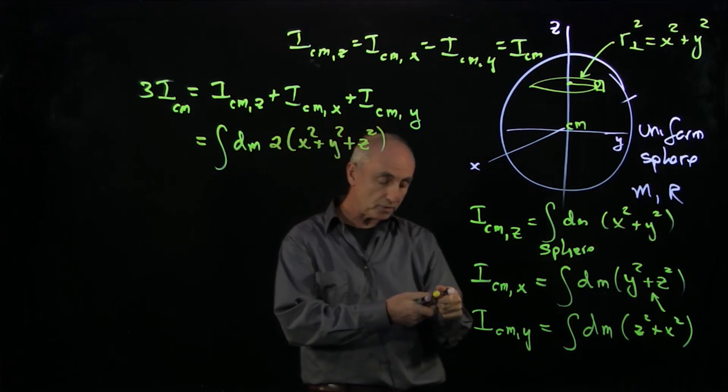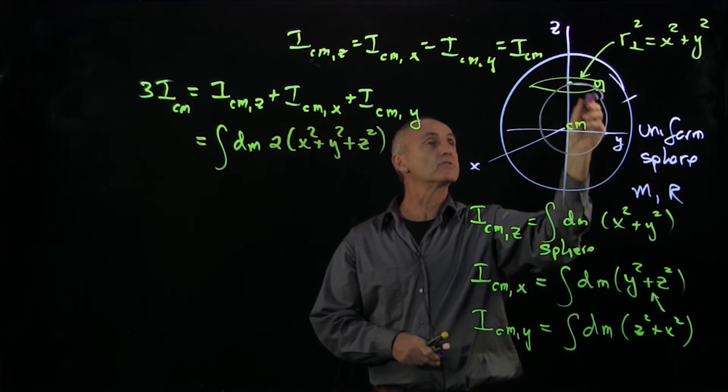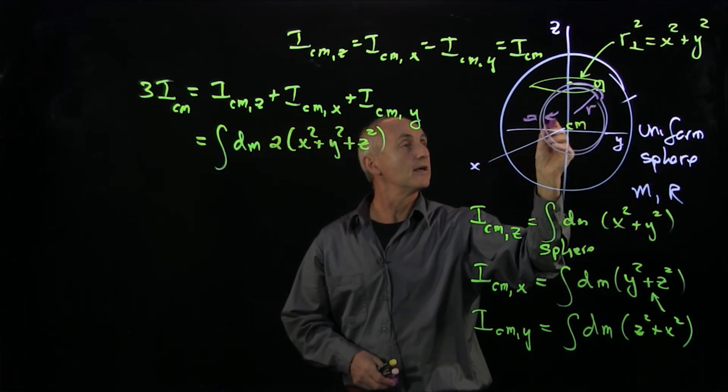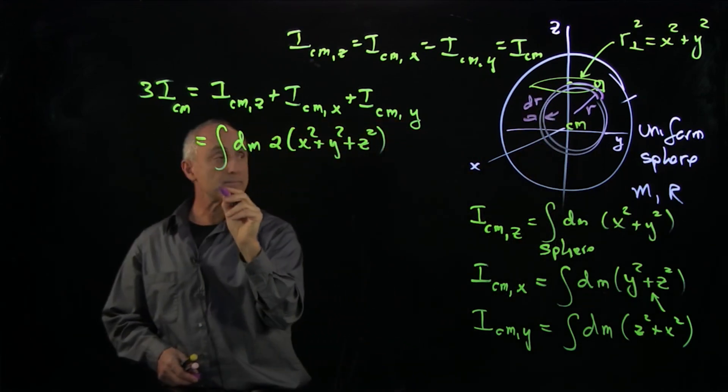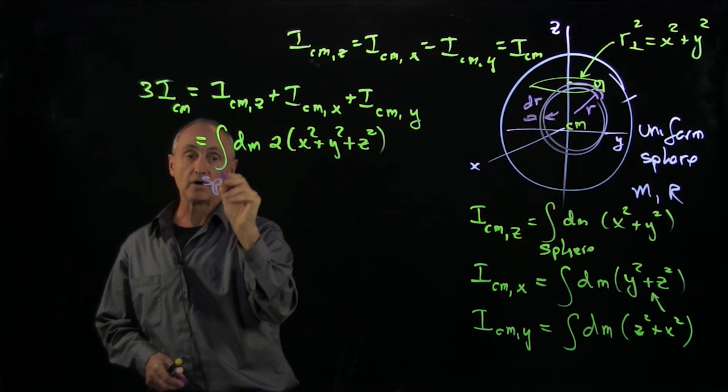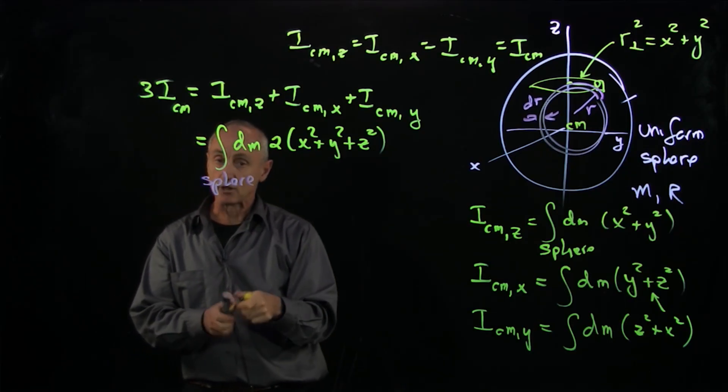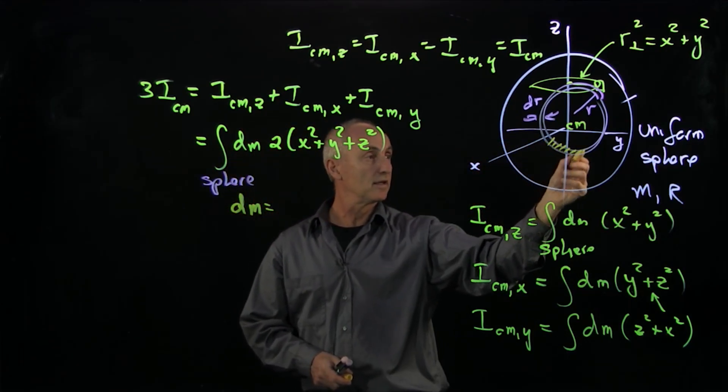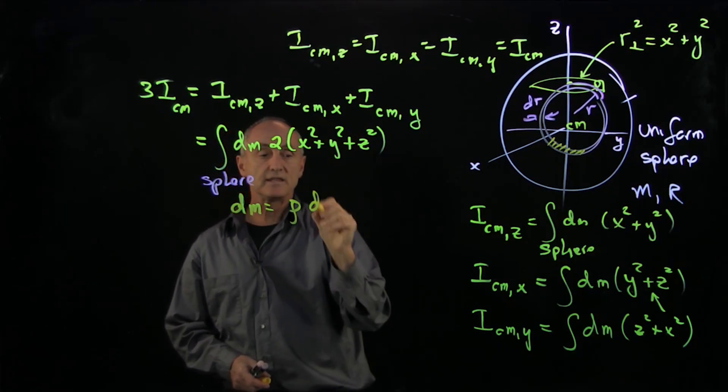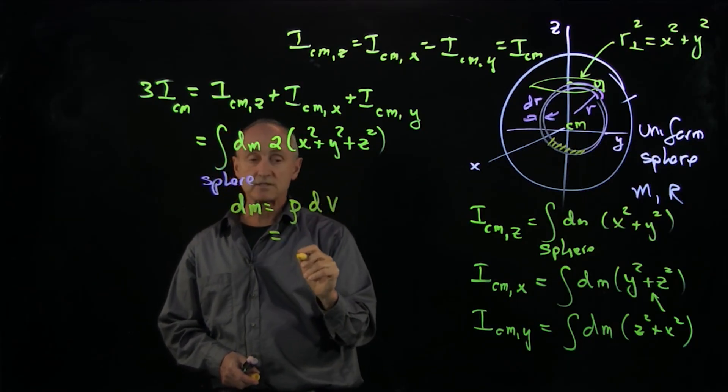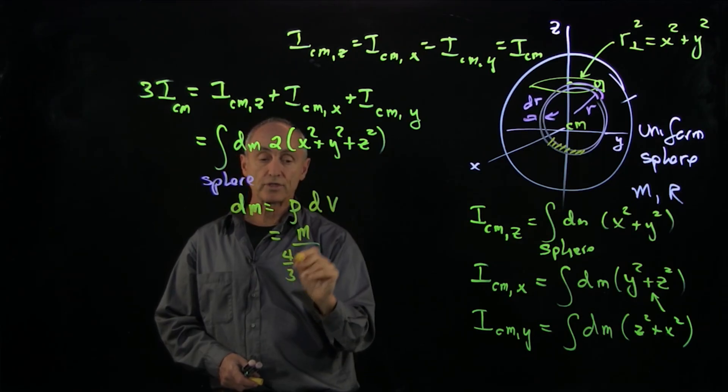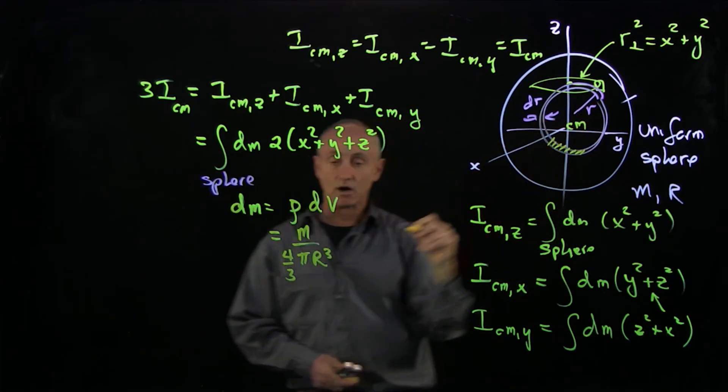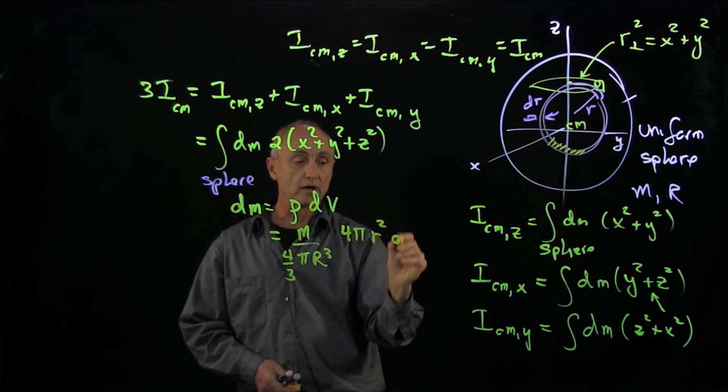But x squared plus y squared plus z squared is the radius of a small sphere of thickness dr. And my mass element, now I have to integrate over the sphere. And so now our mass element, dm, is the volume density times the volume. Now, what is the volume density? Well, that's the total mass over 4 thirds pi r cubed. And what is the volume of a sphere of radius r and thickness dr? That's 4 pi r squared dr.